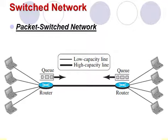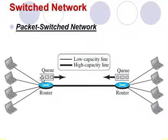Next is the packet switch network. In computer networks, the communication between two ends is done in a block of data called a packet. As the name represents, a packet switch network shows that data can be divided into different blocks, and the communication between devices is done with these packets.